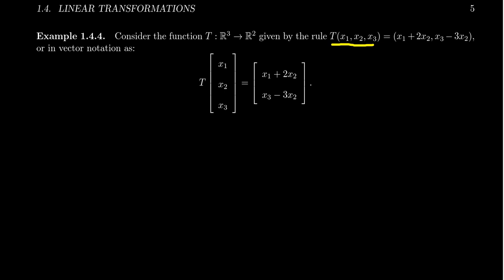T of (X1, X2, X3) — these are just the generic positions of a vector in R3. So R3 just consists of vectors with three real numbers, let's generically call them X1, X2, X3. So T of (X1, X2, X3) is going to equal a vector in R2. The first coordinate will be X1 plus 2X2, and the second component will be X3 minus 3X2.